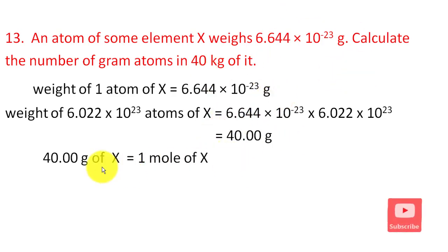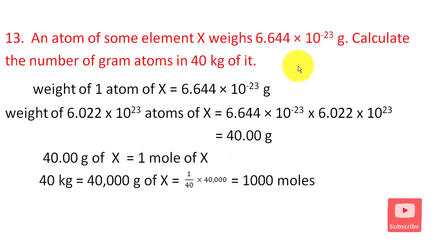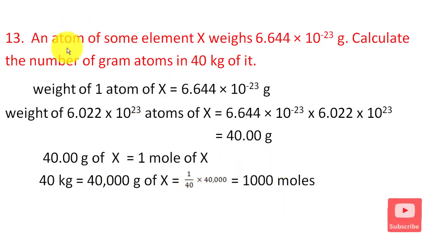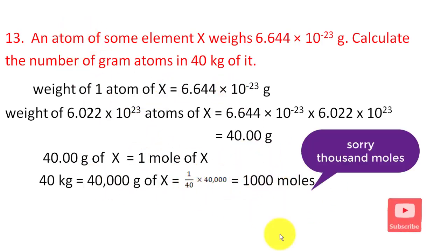40 g is for 1 mole of this element. Given a mass of 40 kg, that equals 40,000 g. So the number of moles is 40,000 g divided by 40 g per mole, giving 1,000 moles.